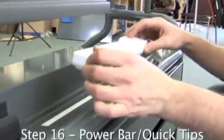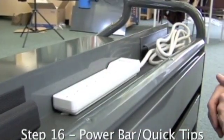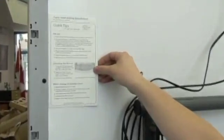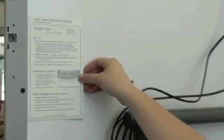To attach the power bar to the wire management channel, simply peel and stick into position. We recommend the quick tips label be applied to the back of your smart board at eye level, making it easy to locate for future reference.